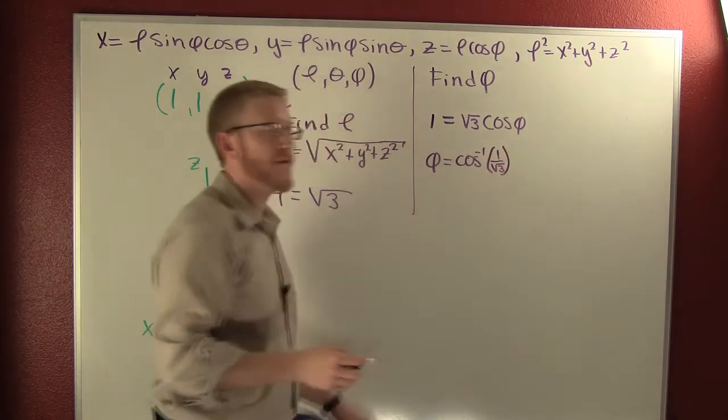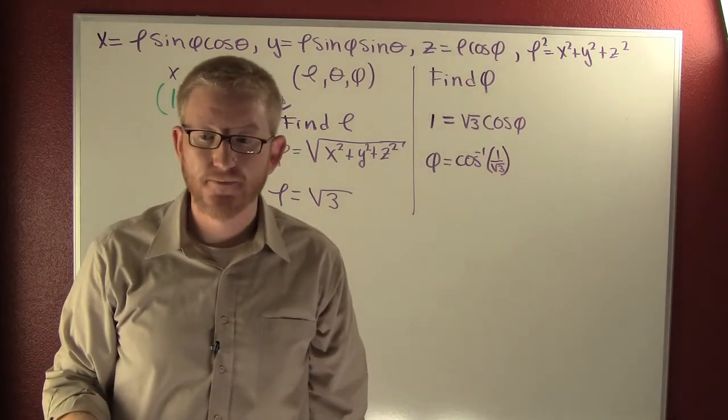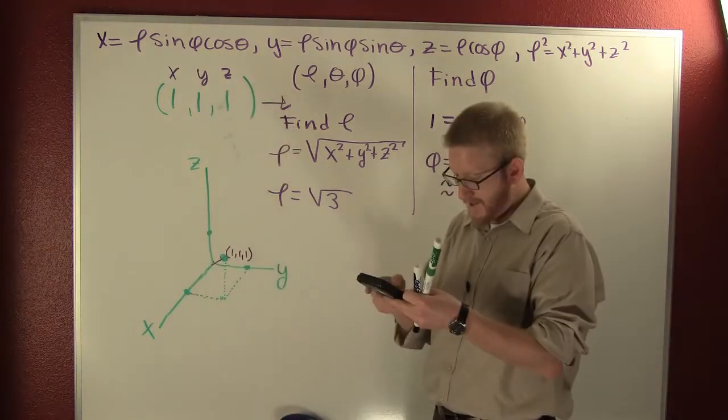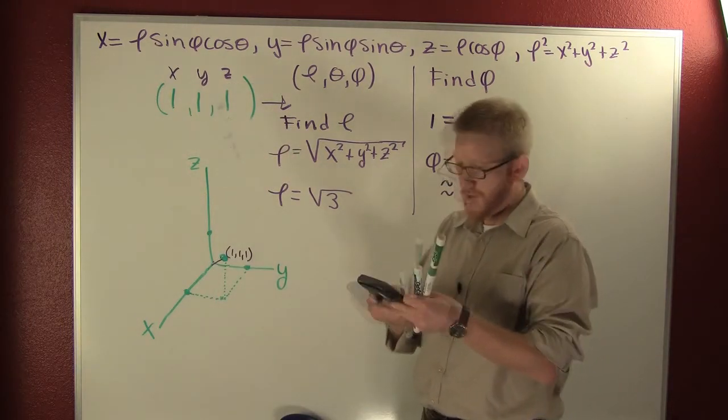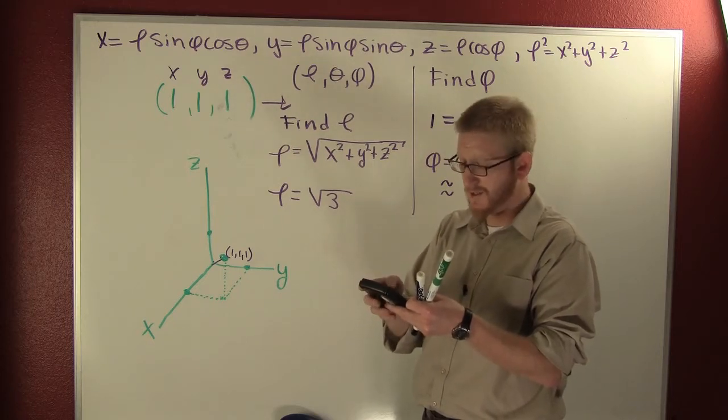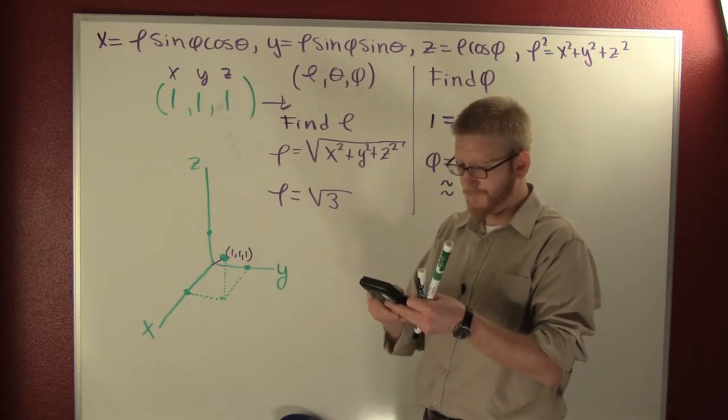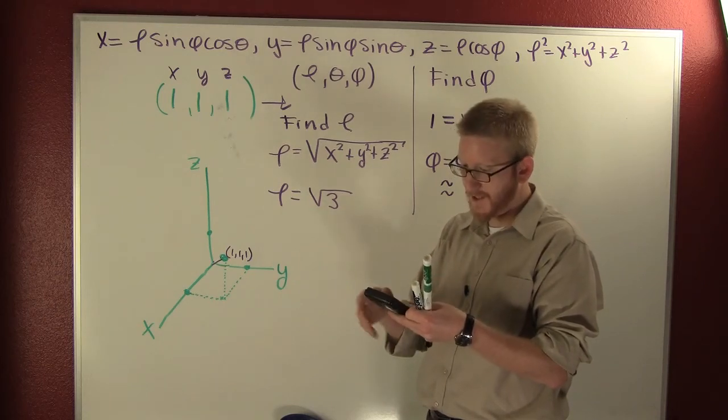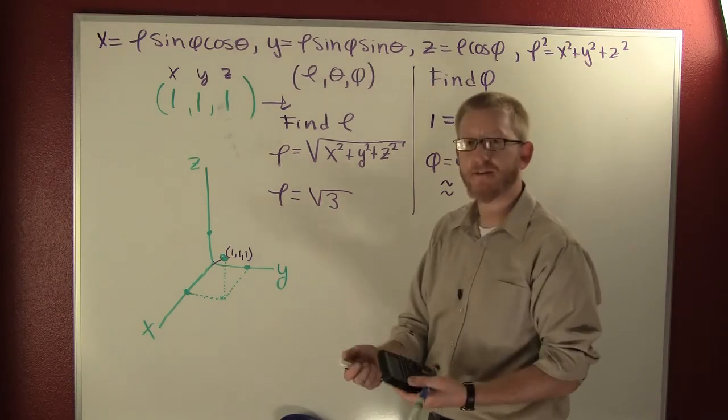So then phi is cosine inverse of one over root three. Now I don't know that exactly, so I'm going to use a calculator to approximate it. I'm going with degrees. They're easier to see. I understand you're supposed to be using radians. It's a continuous measure. 54.7 degrees.